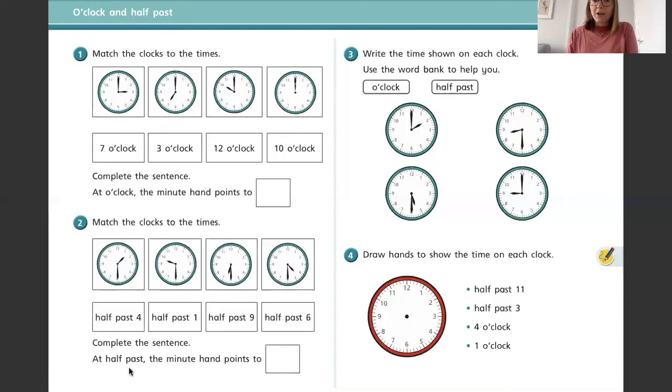Complete the sentence - at half past, the minute hand points to what number on the clock? Question three - write the time shown on each clock. Use the word bank to help you. So look at each clock and then somewhere on your sheet or on your piece of paper, you can write down what is the time. Is it o'clock or is it a half past time?